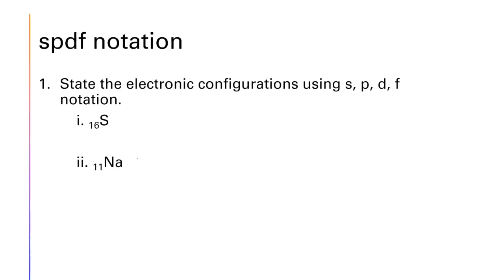For sodium (Na), the same process gives: 1s² 2s² 2p⁶ — that is 10 electrons — and then 3s¹. So the full notation is 1s² 2s² 2p⁶ 3s¹. You need to practice this or refer to the Aufbau diagram with the arrows.